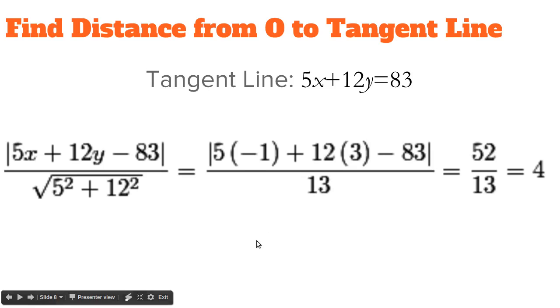The tangent line is 5x plus 12y equals 83. We use the point to a line formula to find the distance. So 5x plus 12y minus 83 all over square root of 5 squared plus 12 squared. The denominator becomes 13. Substitute negative 1 for x and 3 for y. The absolute value of the numerator is 52, and 52 divided by 13 is 4.